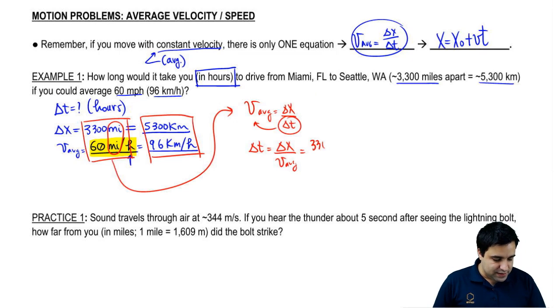And this is 3300 divided by 60. You put this in the calculator and you get 55. But let me show you the units real quick. Delta x is 3300 miles. And this is 60 miles per hour. This miles cancels with this miles.